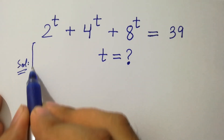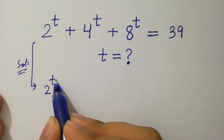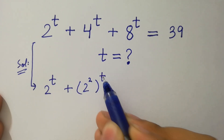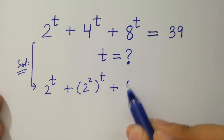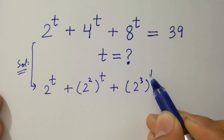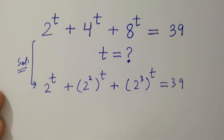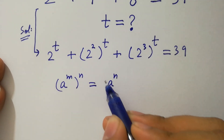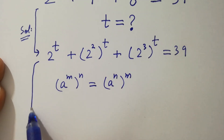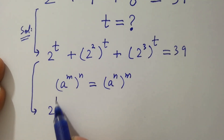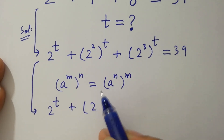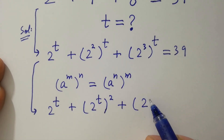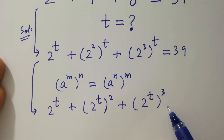We have here 2 to the power t, plus 4 to the power t which is the same as 2 squared to the whole power t, plus 8 to the power t which is the same as 2 cubed to the whole power t, equal to 39. Since a to the power m to the whole power n equals a to the power n to the whole power m, it will be 2 to the power t, plus 2 to the power t squared, plus 2 to the power t cubed, equal to 39.